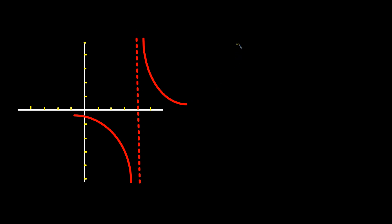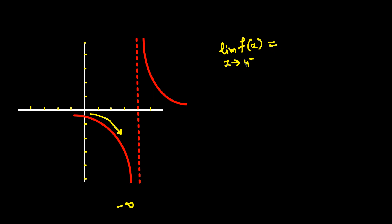In this example, we see a vertical asymptote. The limit of f of x as x approaches 4 from the left — following the function downward along the asymptote — keeps going towards negative infinity. So the limit as x approaches 4 from the left is equal to negative infinity.